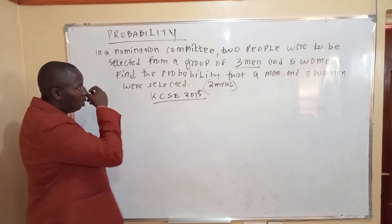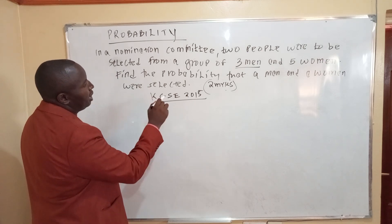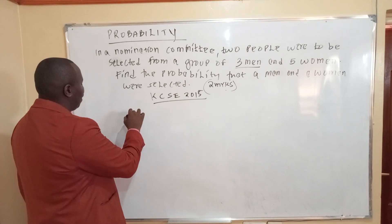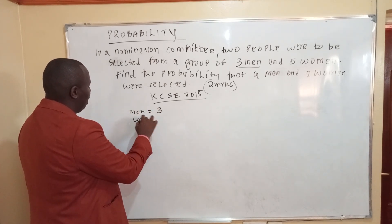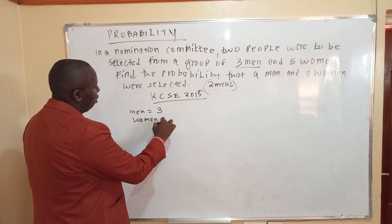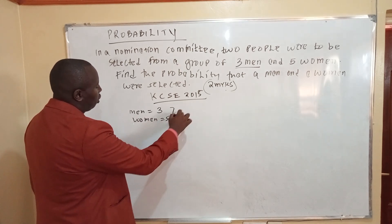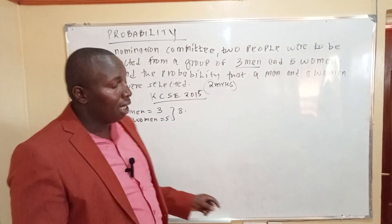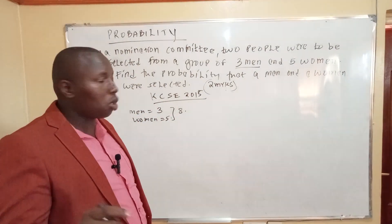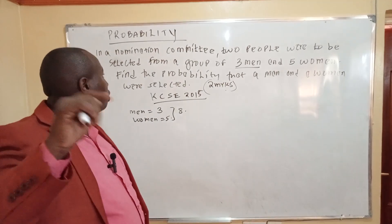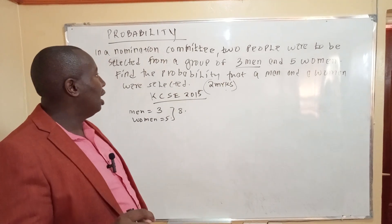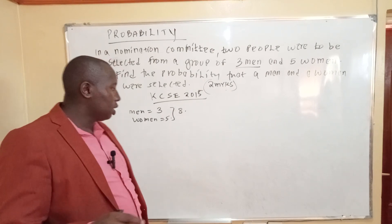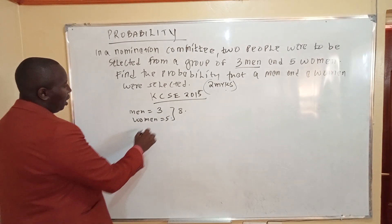Find the probability that a man and a woman were selected. We have three men and five women, so in total we have eight people in that committee. Two are to be selected from the group of three men and five women.